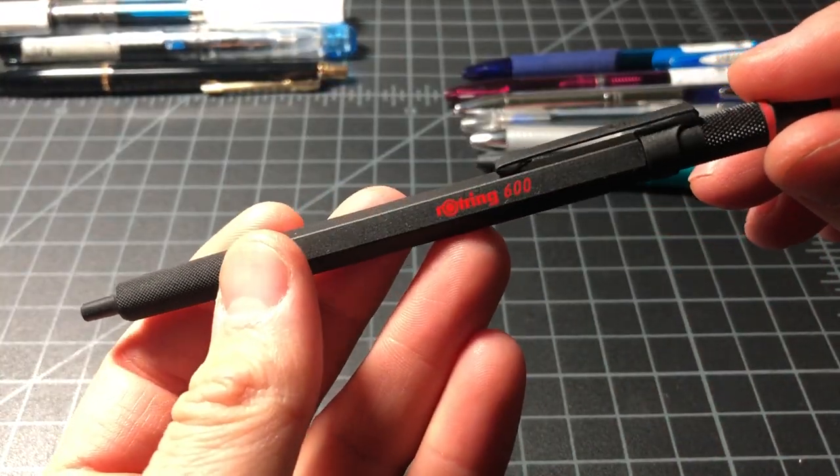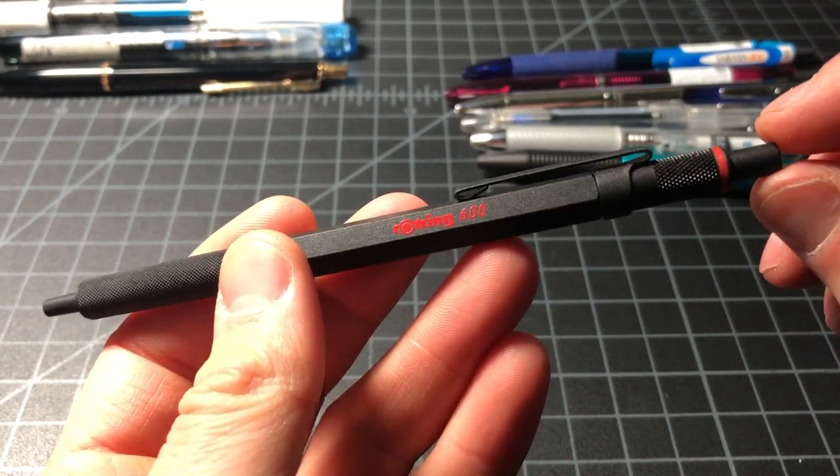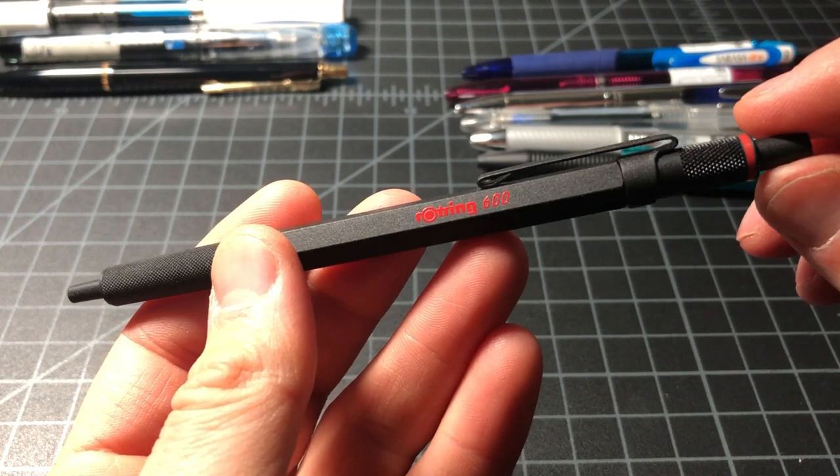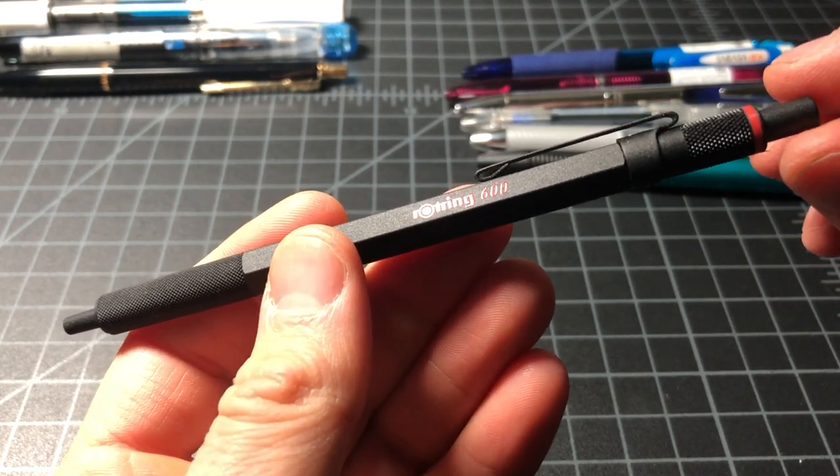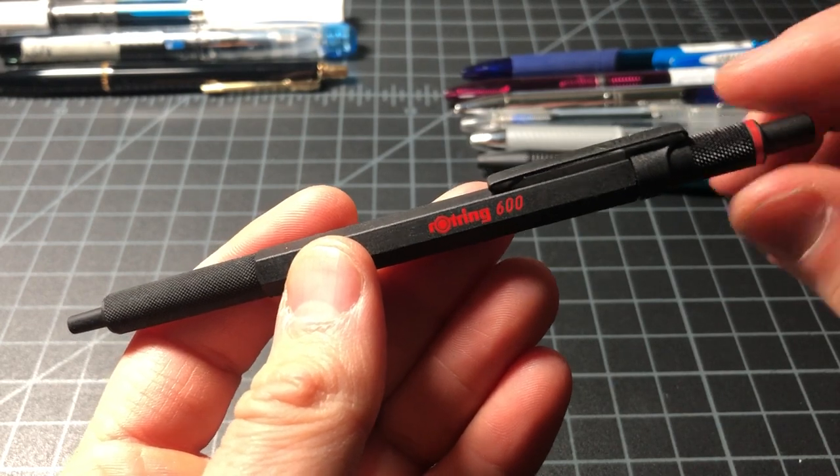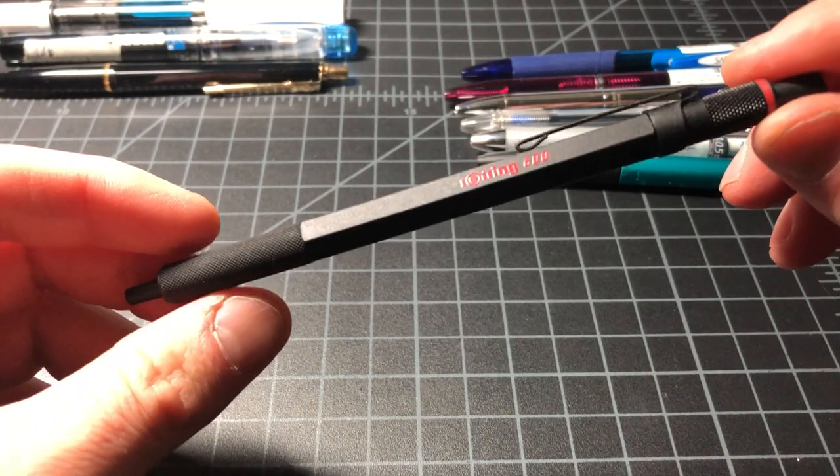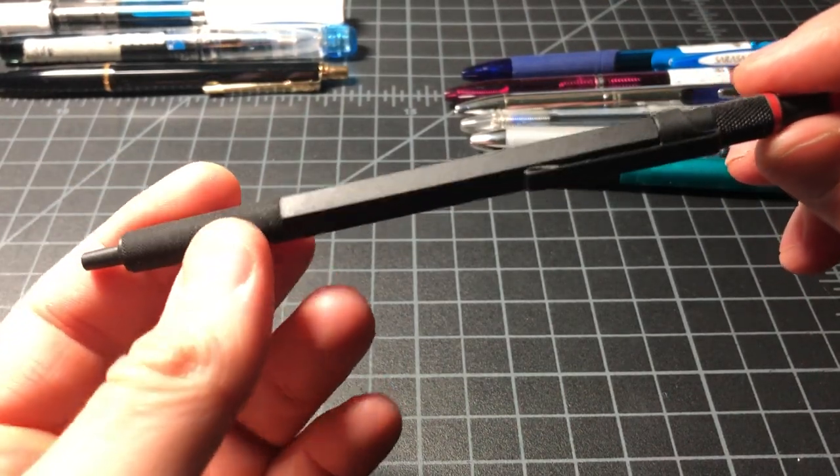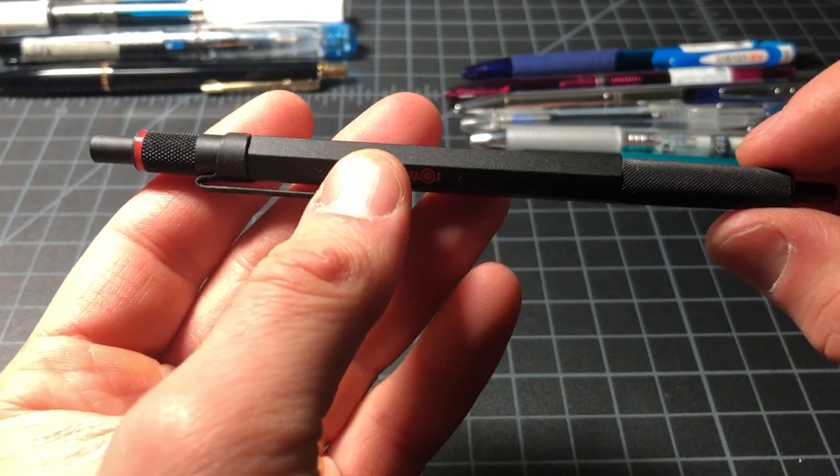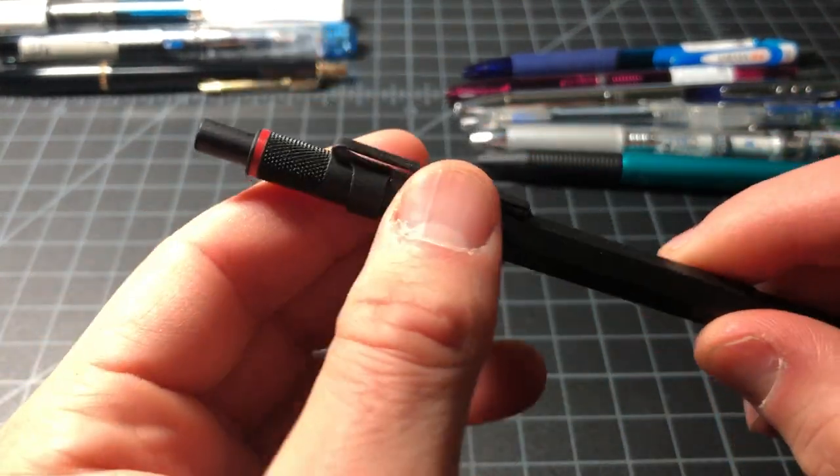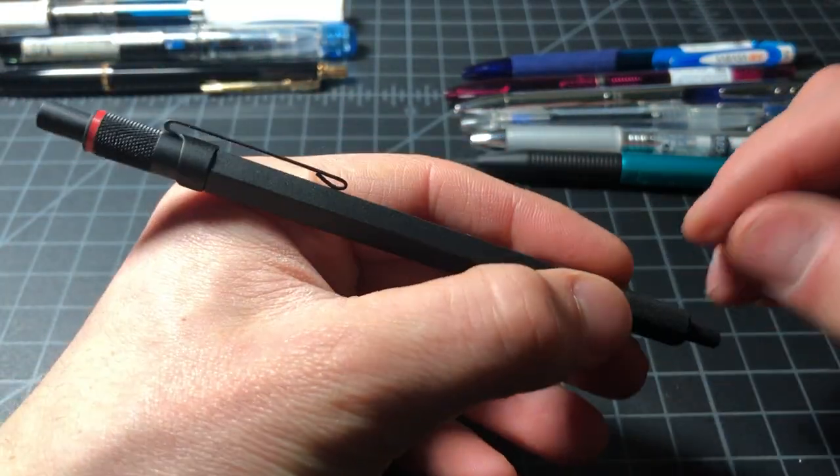Then we have the rotary 600. This is the Japanese re-release, this was new for 2018. This pen, for thirty dollars, is probably if you're only gonna buy one pen this year, I would say this would probably be the one to get. Rotary 600, just that classic design. With this re-release it had almost no problems or shortcomings compared to the original. Minor change to the barrel here, but past that you get all the quality of the original rotary 600.